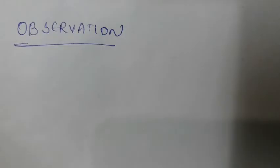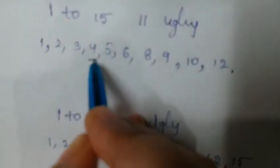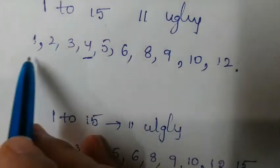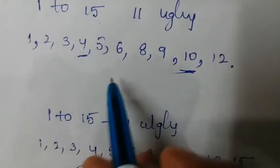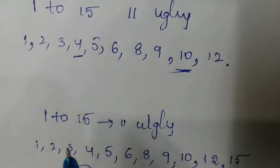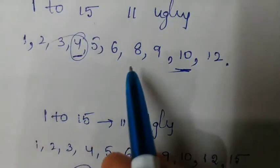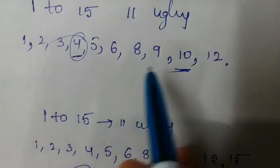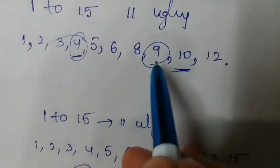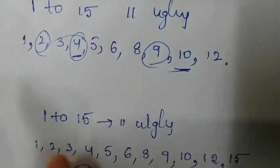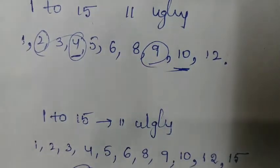Now let's look deeper into the concept using dynamic programming. Our task is to find the nth ugly number — for example, what is the 4th ugly number? What is the 9th ugly number? What is the 8th ugly number? We need to find which ugly number falls at a given position.